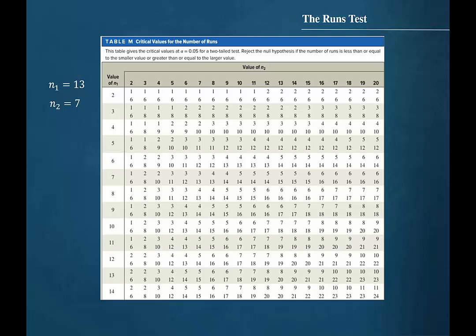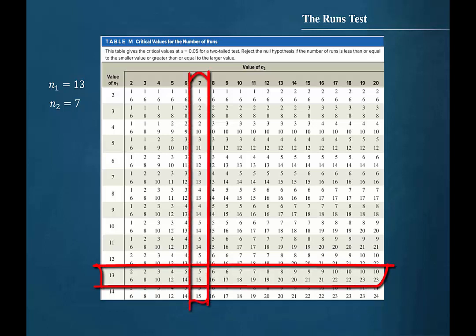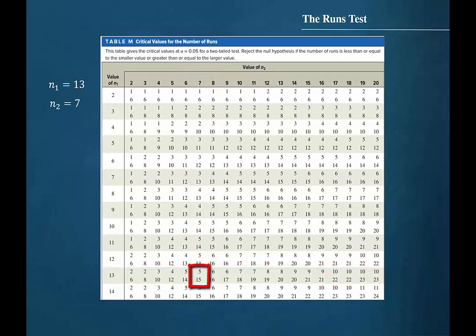This table gives the critical values at alpha equal to 0.05 for a two-tailed test. We should reject the null hypothesis if the number of runs is less than or equal to the smaller value or greater than or equal to the larger value. The left-hand column gives us the value of N1, so we should find the row where N1 is equal to 13. We should find where that row intersects the column where N2 is equal to 7. The intersection of this row and this column shows that the critical values are 5 and 15.